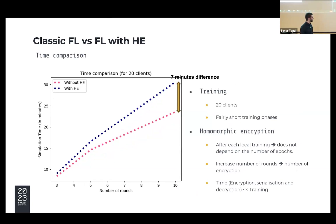This slide presents the time comparison for a federated learning simulation of 20 clients. Encryption starts after each local training, so it is not dependent on the number of epochs. If you increase the number of epochs, you increase the number of encryption phases. The encryption process — including encryption, serialization, deserialization, and decryption — adds about seven minutes difference between results with and without homomorphic encryption. This overhead is negligible compared with the training time.